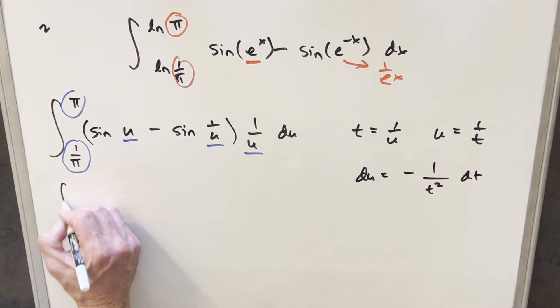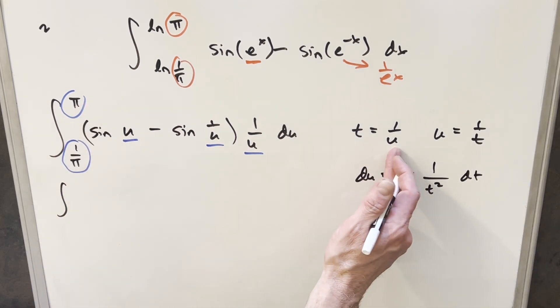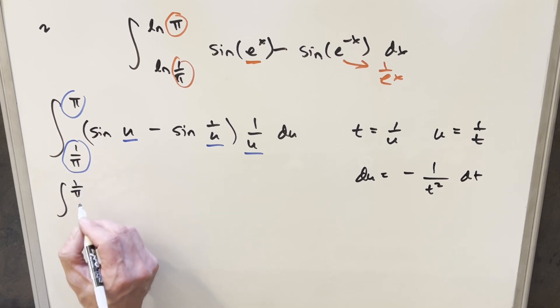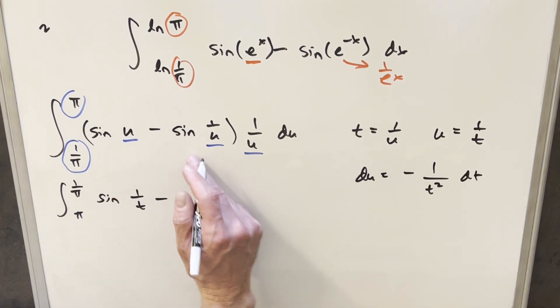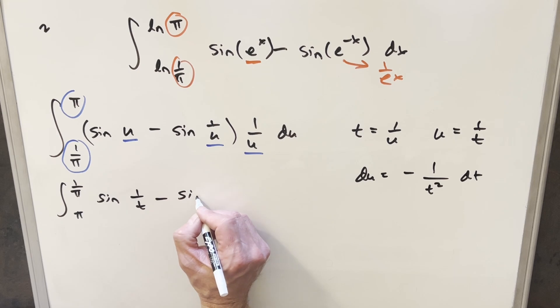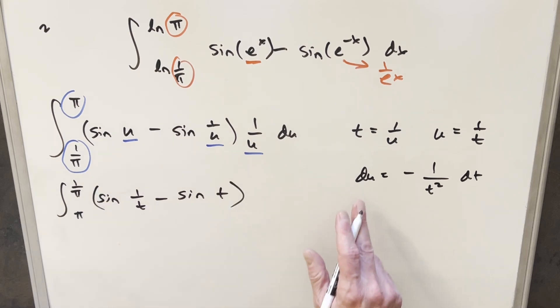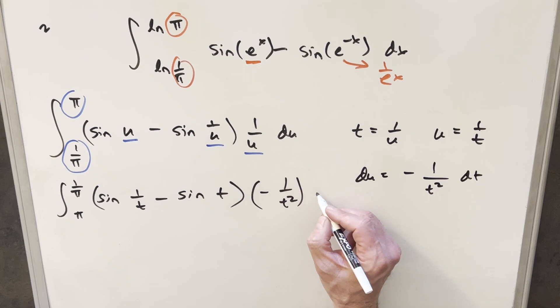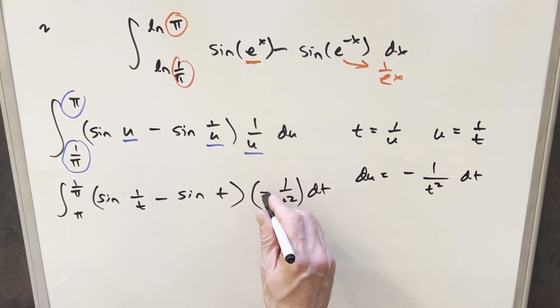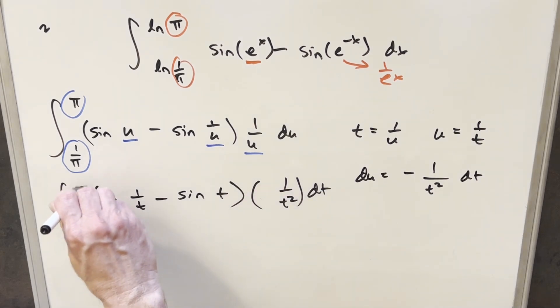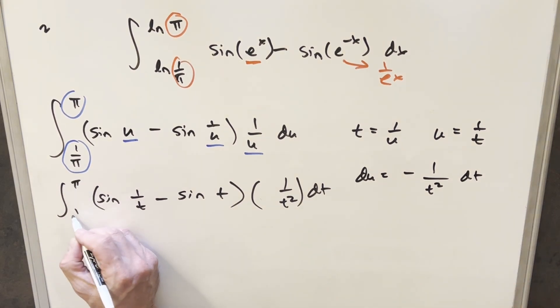So then I'll go ahead and substitute. But this is pretty nice because we put π in here, this becomes 1 over π. And then we put 1 over π and we just get π. So we kind of just flipped our bounds around. Then for sine u, this becomes sine 1 over t. And then 1 over u is just t. So this becomes sine t. Then for du, we just get all this stuff over here. So let me just write that in. Minus 1 over t squared dt. But I can take this minus sign here, bring it out front, and use the swap the bounds back. So we can write this, now we're going from 1 over π to π.